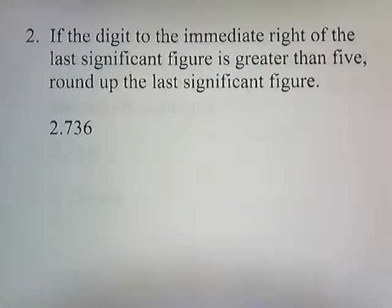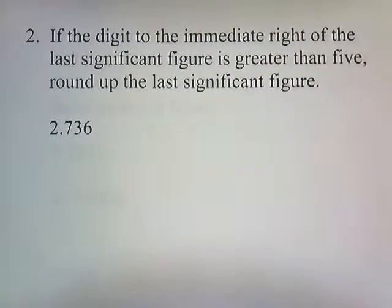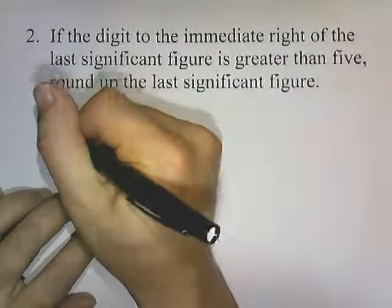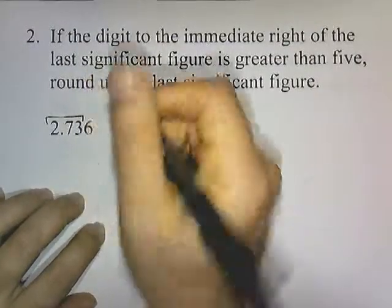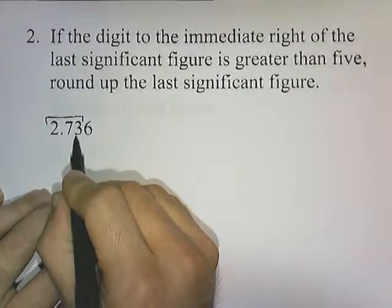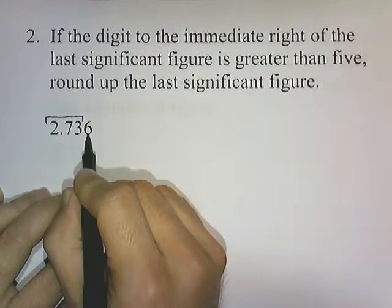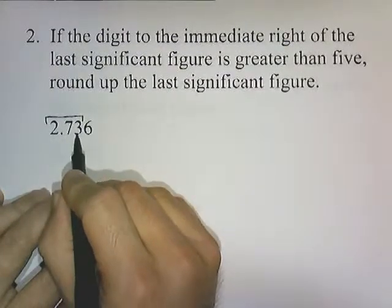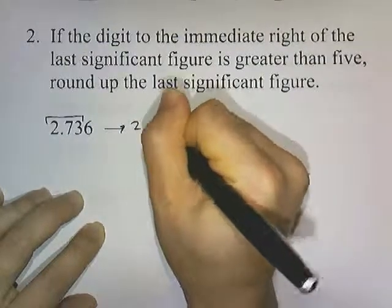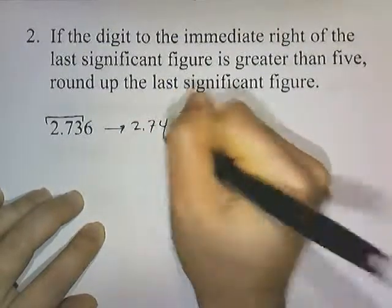If the digit to the immediate right of the last significant figure is greater than 5, round up the last significant figure. Rounding to three significant digits: this is the third digit, which is 6. Since 6 is greater than 5, we round that one up to 2.74.